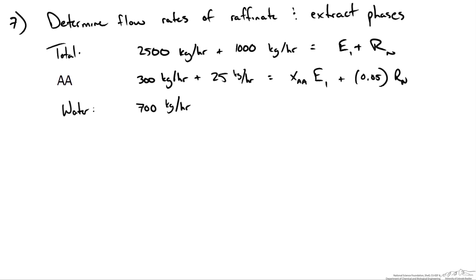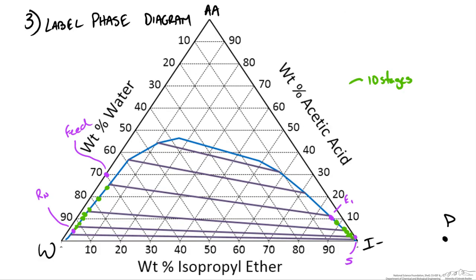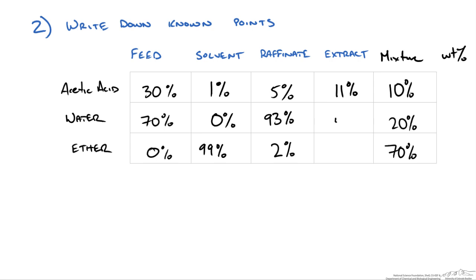The water balance: 70% of feed is 700 kg/hr plus none in our solvent, equal to the water composition in the extract times E plus 0.93 times Rn, since the raffinate is 93% water. Going back to read the extract composition off the plot: it is roughly 11% acetic acid, about 4% water, giving 85% ether. We will use these values.